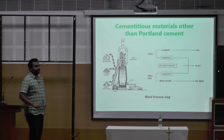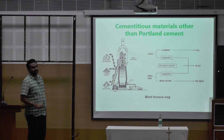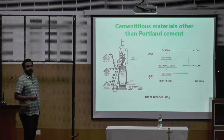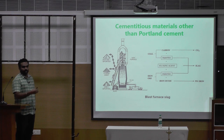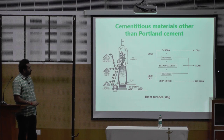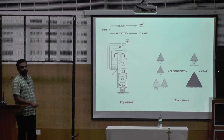Apart from cement, we have other types of cementitious materials. For better understanding, I have shown only three types — there are many more available. This is the production process where you have blast furnace slag: from iron ore and its impurities, shifted to high temperature, and finally we get slag, which can be used as a binder replacement.